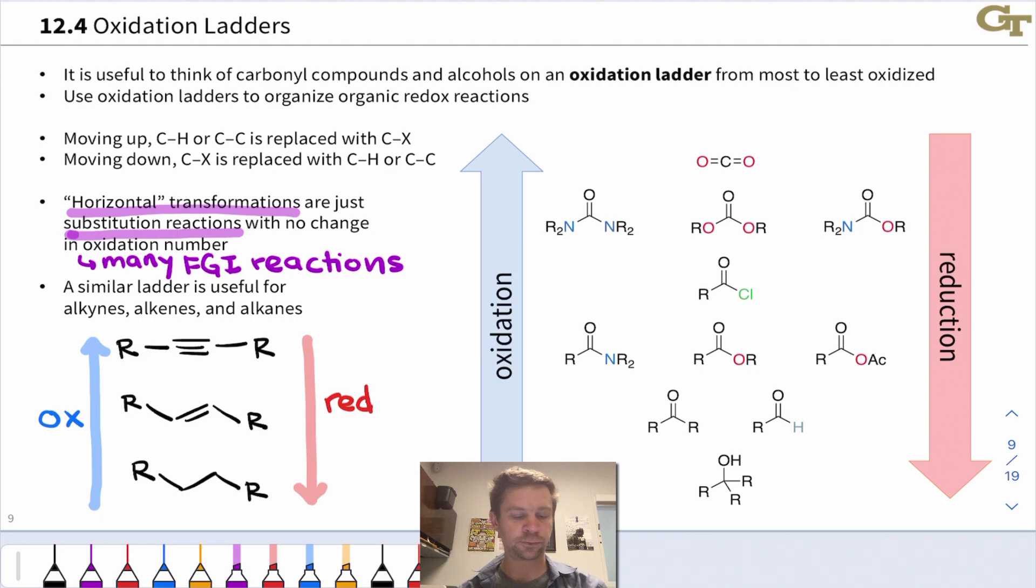There's a similar oxidation ladder for alkanes, alkenes, and alkynes, with alkanes at the bottom. These are the most reduced hydrocarbons. If we lose H2, we get to an alkene there in the middle, and the most oxidized are alkynes, where we've lost yet another equivalent of H2.